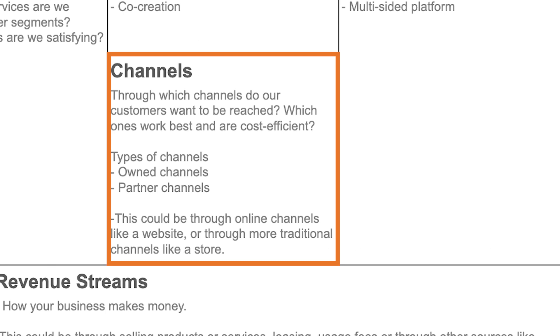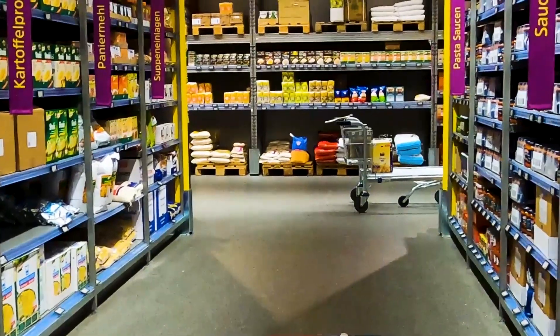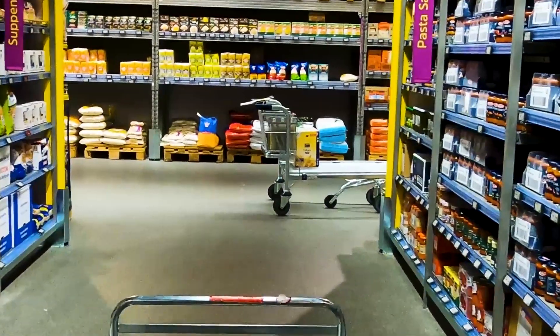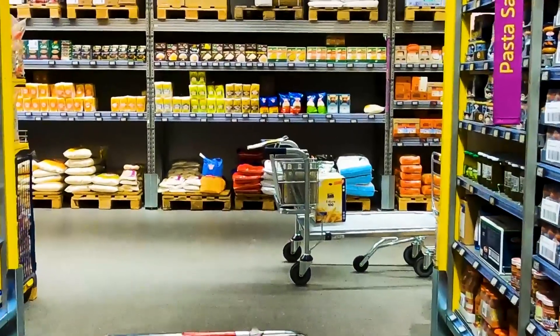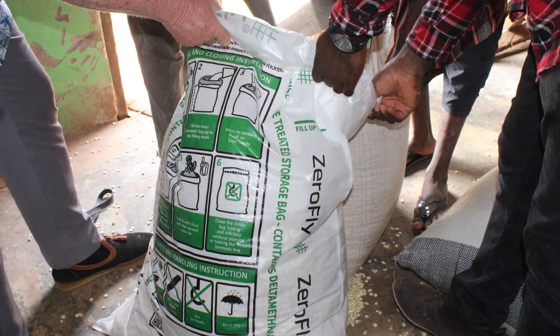Once you've figured out what value you're delivering and who your customers are, the next key element is the channels through which you deliver your value proposition to your customer segment. You can have your own channels or partner channels. For example, if I sell products I could sell them on my own online shop or in a physical store, or I could partner with distributors who pick my product wholesale and sell in their own shops. At Sexi Technologies we use both our own channels and partner channels for our Zero Fly hermetic bag.